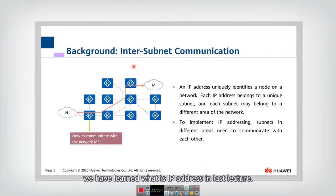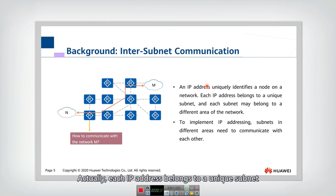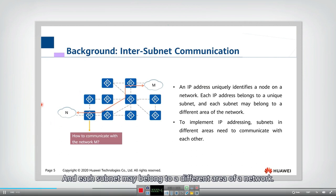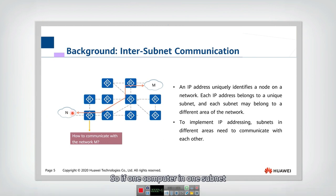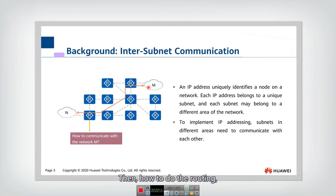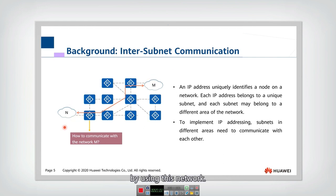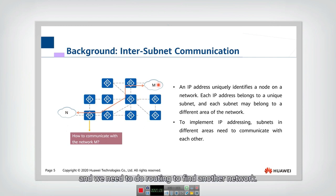We have learned what an IP address is in the last lecture. An IP address uniquely identifies a node on the network. Each IP address belongs to a unique subnet, and each subnet may belong to a different area of a network. So if one computer in one subnet wants to find another computer in another subnet, we need to use routers and do routing to find the other network. That is inter-subnet communication.